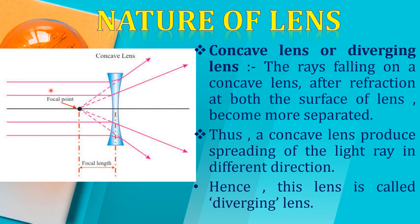So basically, if any light ray comes parallel to our principal axis and passes through the convex lens, after refraction it meets at a point. I have told you that in the mirror we have one principal focus and one center of curvature, but here we have two sides — there is a principal focus on each side and a center of curvature on each side. When the light ray comes parallel to the principal axis, after refraction it is collected at one point — the principal focus, which is on the focal focus point. In the case of the convex lens, we call it the converging lens.